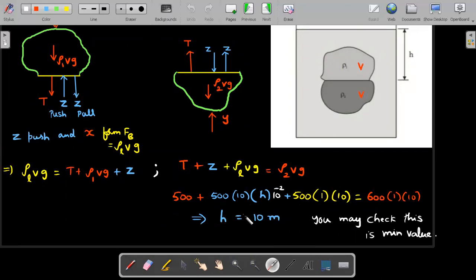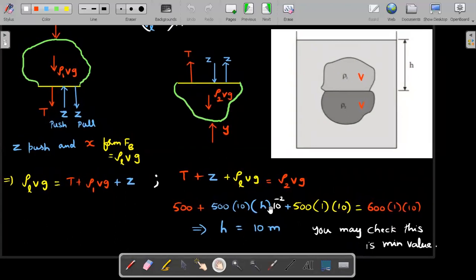So rearranging, you will end up getting H value is 10 meter. You should understand and argue that this should be the minimum value because if this equation has to be satisfied for equilibrium, and I let's say lessen the value of H even further, so if this number reduces, then this number should increase to keep the equality, which means it will go beyond 500 and the glue will break. So the minimum value required for this particular things to be intact should be equal to 10 meters.